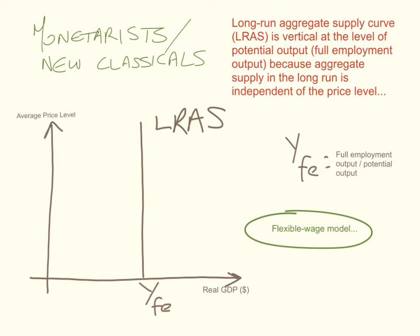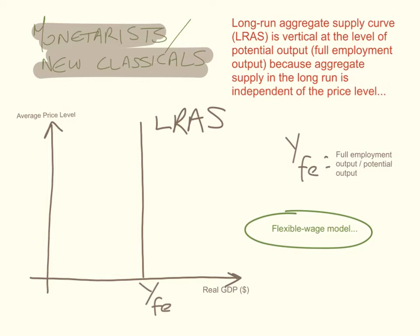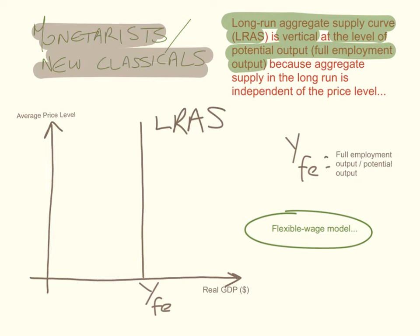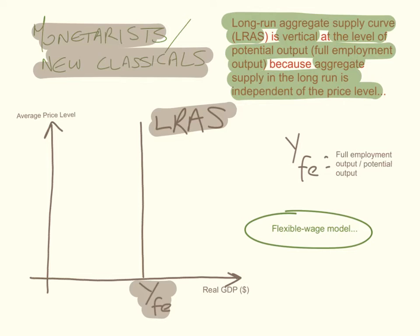So what do the monetarists or the new classical economists believe? What is the model they propose for long-run aggregate supply? They propose that long-run aggregate supply, LRAS, is a vertical curve at the level of potential output — the full employment level of output, YFE — because aggregate supply in the long run is independent of the price level. So they believe that once the economy reaches full employment, the long-run aggregate supply curve is vertical.